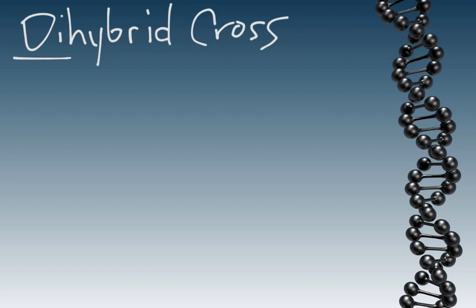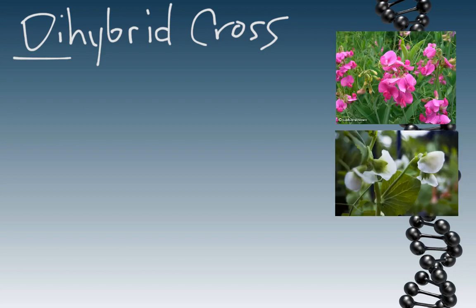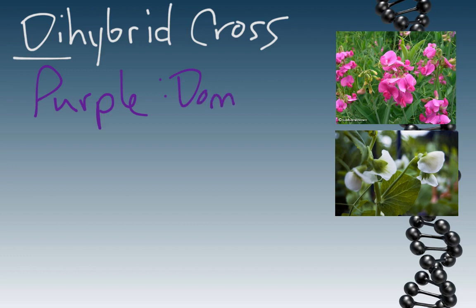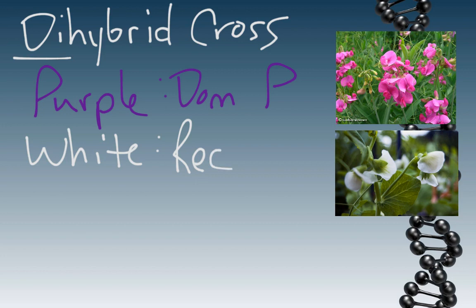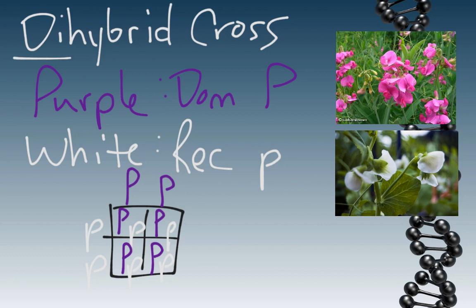The two traits we are going to use are flower color and pod color. Mendel noticed there were two types of flower color: purple and white. He discovered that purple flowers were dominant, so we use a capital P to represent those, and white flowers were recessive, so we use a lowercase p. If we did a monohybrid cross using a plant homozygous for purple — with two purple alleles — crossed with one homozygous recessive for white, we would get a phenotypic ratio that was 100% purple, because purple is dominant to white.